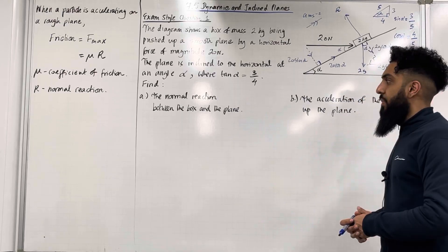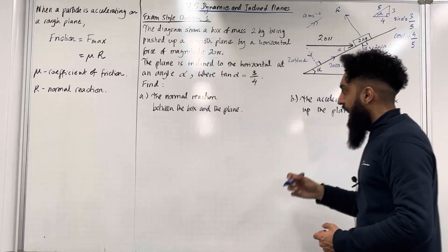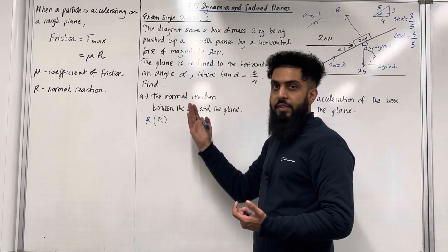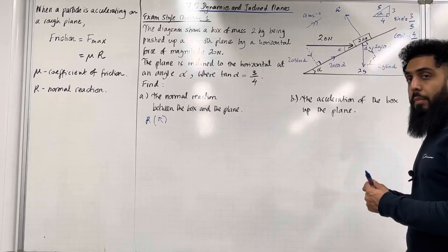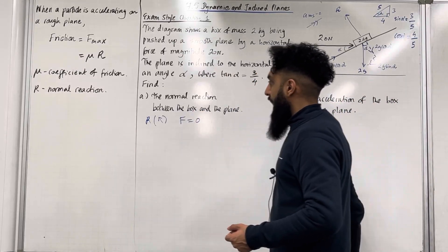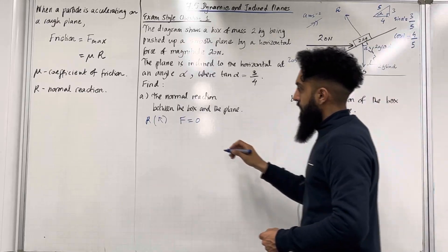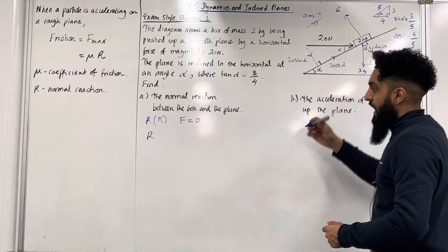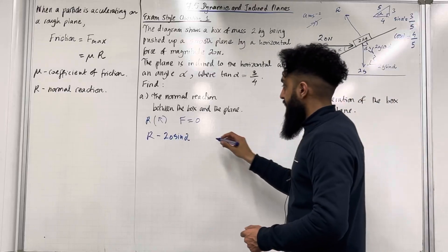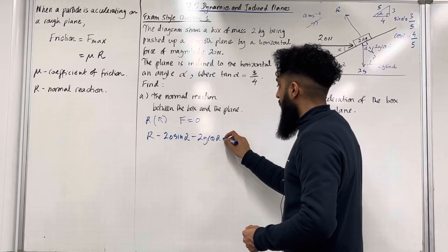Part A: we want to find the normal reaction between the box and the plane, so we are trying to calculate R. To find R, I'm going to be resolving perpendicular to the plane, taking this direction to be the positive direction. We know that the box is not moving perpendicular to the plane, so the resultant force F equals 0. The resultant force is R minus 20 sin alpha minus 2g cos alpha, and this must equal 0.